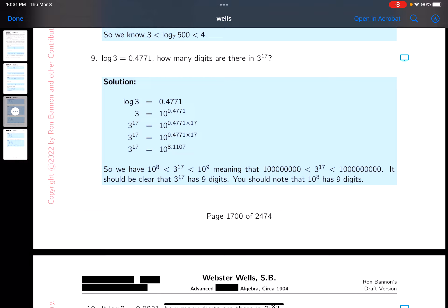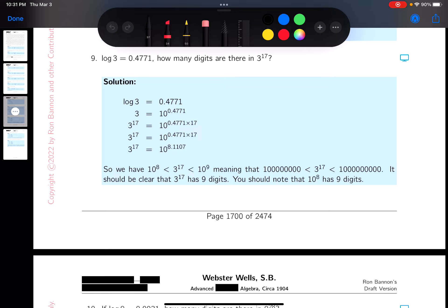I could understand someone reading this and saying they have no idea how to answer the question. The one thing I'd hate to see from a student, though, is if they actually did a computation on 3 to the 17th and then just counted the digits. To me, that would be kind of crazy. However, it could be done. I'm not saying it couldn't be done.